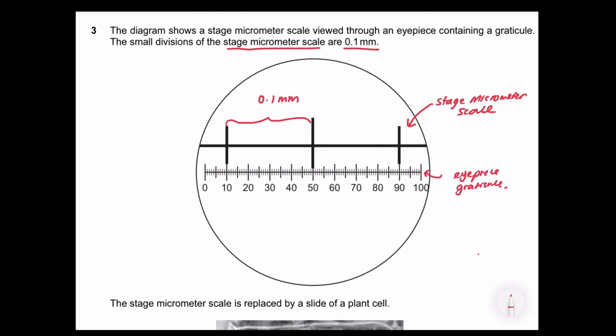So we can see that one division of the stage micrometer is matching with 40 eyepiece reticule division. So it's like a nice match because the line is like from midpoint to the midpoint. So this is the perfect alignment. If you want to take from 10 to 90 divisions, it's also possible, it will end up the same answer.